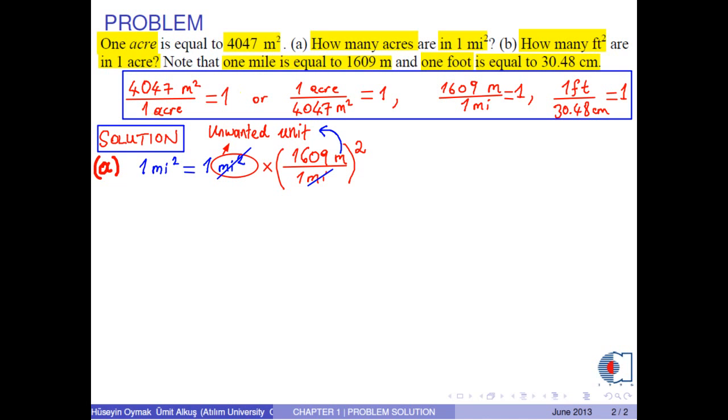So we convert it into acre by the following conversion factor, so that meters squared are cancelled. Therefore, one mile squared is approximately 640 acres.